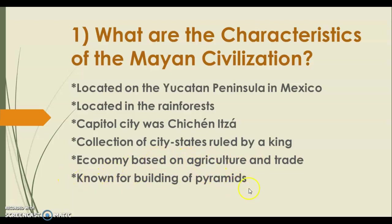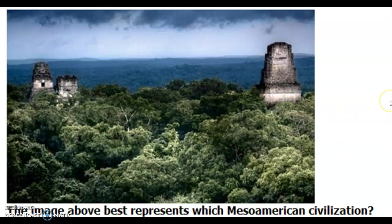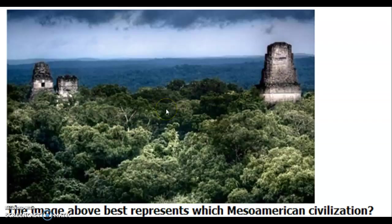The Mayans were known for building pyramids. Whenever you see a pyramid on the SOL that doesn't look like the Egyptian pyramids — the Mayan pyramids had steps on them. So whenever you see a stepped pyramid on the test, it is going to be a Mayan temple. A sample SOL question asks which Mesoamerican civilization the image represents — the answer is the Mayans, because of the tropical trees surrounding it. That rainforest setting was distinct to the Mayan civilization.